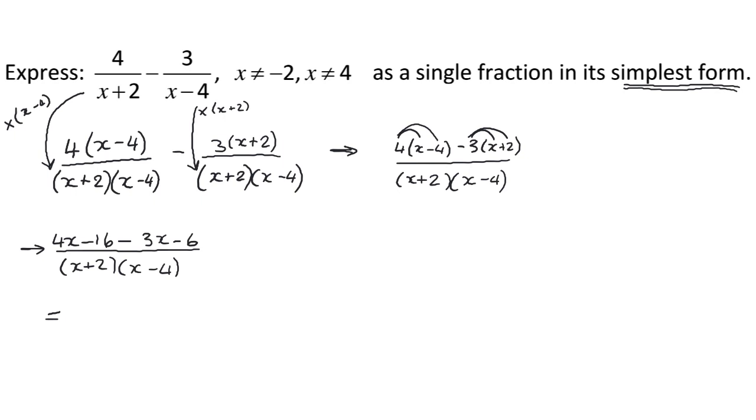So I'm going to simplify that down. 4x take away 3x is just x. Negative 16 take away 6 is negative 22, over x plus 2, x subtract 4. At this point, I can't take out any common factors, so that's me finished that question.